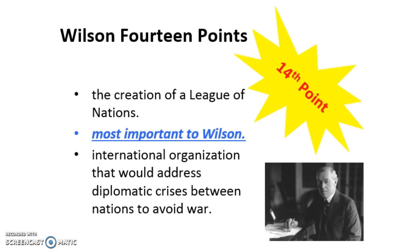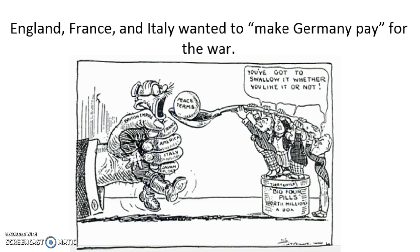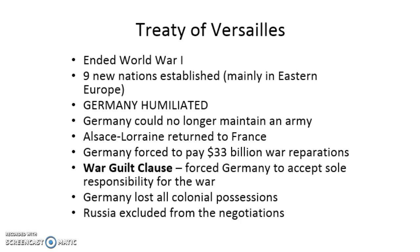Wilson brings his talking points to the Treaty of Versailles. Unfortunately, the other Allied powers — France and Italy — reject points 1 through 13. They do end up adopting the League of Nations into the Treaty of Versailles. But the reason they reject the other points is that they really want to make Germany pay for the war — to punish and humiliate them. Most importantly, the key point in the Treaty of Versailles was the war guilt clause, which forced Germany to accept sole responsibility for the war. They lost all their colonial possessions, and Germany wasn't even invited to the peace negotiations.